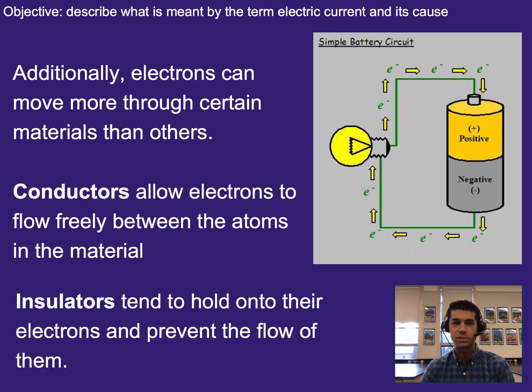Additionally, electrons can move through certain materials more easily than others. Electrons that can move more freely, we say that material is a conductor, versus when it can't move through a material because the atoms in that material tend to hold on to electrons or prevent the flow, we say that that's an insulator. Now, these two things are not binary. There's a whole slew of things that are in between as well.